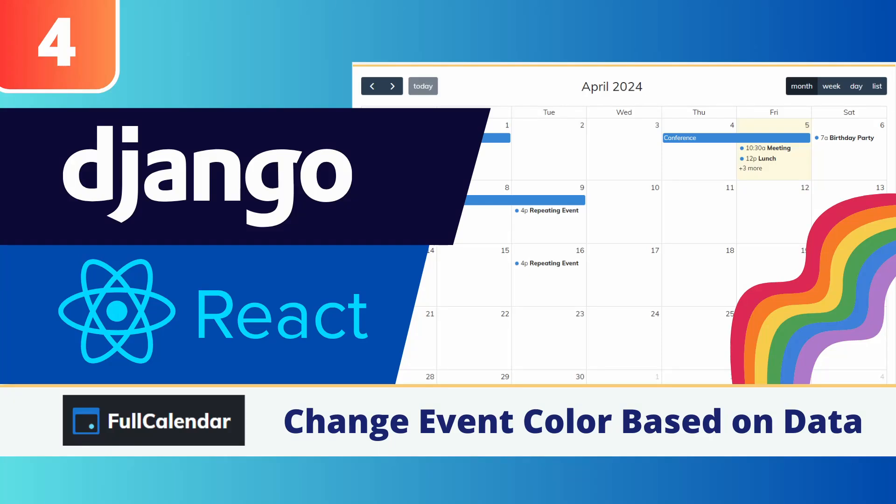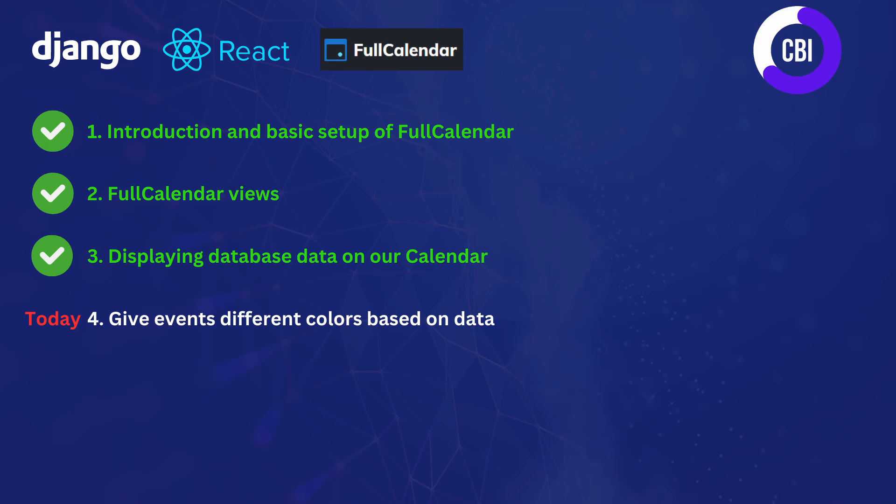Hi everyone and welcome to a new video on the CBI channel. In this tutorial series, we're creating a calendar inside of our Django and React application using Full Calendar. This is not the first video in this series — we've already done three before, covering an introduction, basic setup, different views, button controls, and displaying Django backend data on our React.js frontend.